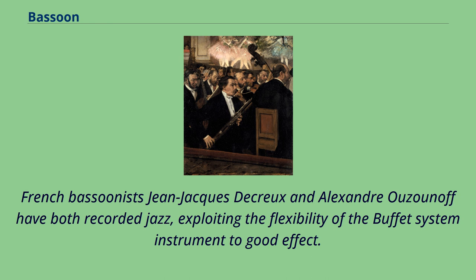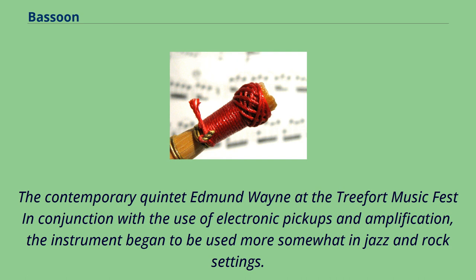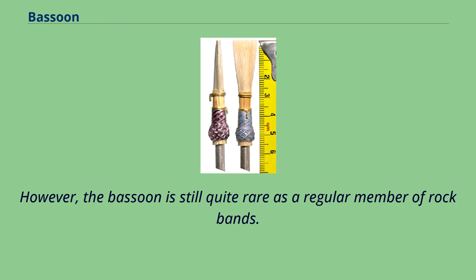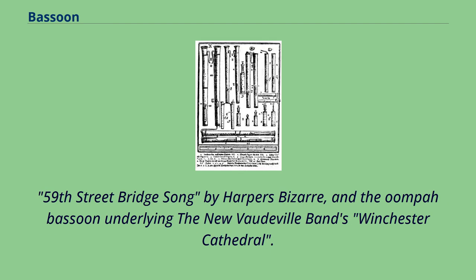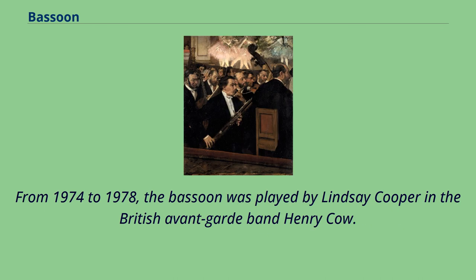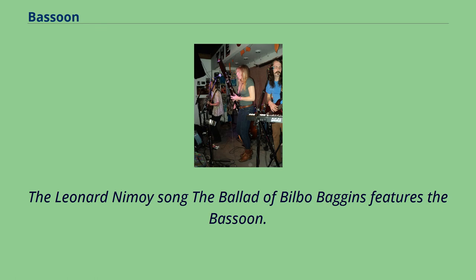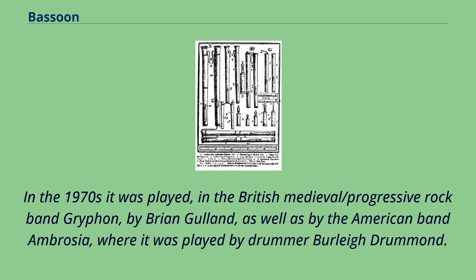In conjunction with the use of electronic pickups and amplification, the bassoon began to be used more in jazz and rock settings, though it is still quite rare as a regular member of rock bands. Several 1960s pop music hits feature the bassoon, including The Tears of a Clown by Smokey Robinson and The Miracles, Jennifer Juniper by Donovan, 59th Street Bridge Song by Harper's Bizarre, and the oom-pah bassoon underlying the New Vaudeville Band's Winchester Cathedral. From 1974 to 1978, the bassoon was played by Lindsay Cooper in the British avant-garde band Henry Cow. The Leonard Nimoy song The Ballad of Bilbo Baggins features the bassoon. In the 1970s it was also played in the British medieval/progressive rock band Gryphon by Brian Gulland, as well as by the American band Ambrosia, where it was played by drummer Burleigh Drummond.